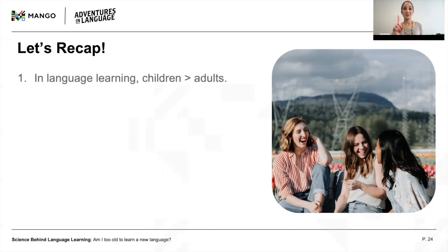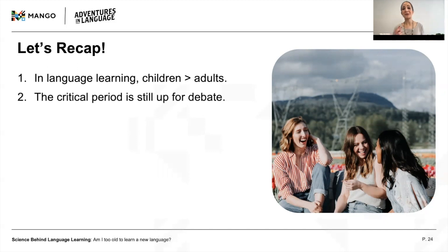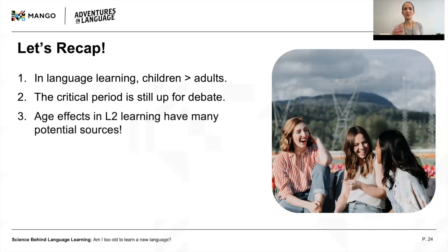To recap: number one, if there's one thing everyone can agree on, it's that children have an advantage over adults when it comes to language learning success. Number two, this advantage doesn't necessarily translate into 'the younger the better.' It's possible that there is a continuous relationship between age and ultimate attainment — starting at age three is better than five, which is better than seven, and so on. But if there is a critical period, anyone who starts learning before it ends can achieve native-like proficiency. Number three, where do age effects come from? Biological changes in hormones and neuroplasticity, superior learning ability, higher motivation, richer learning environments, and less interference from the first language may all contribute.